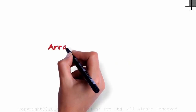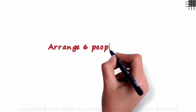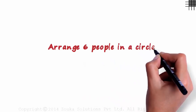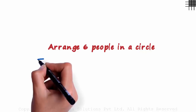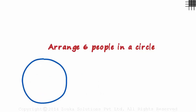In how many ways can we arrange six people in a circle? We have seen problems in which we have arranged people in a row, but this time we have to arrange them in a circular fashion. Six people will be seated like this. In how many ways can we arrange six people around this circle?